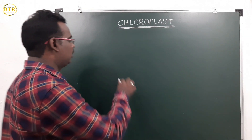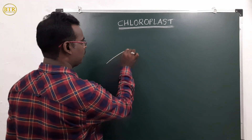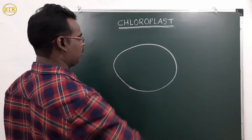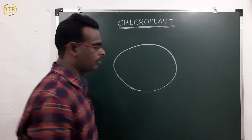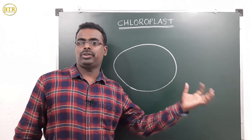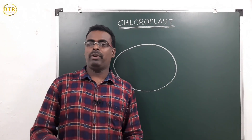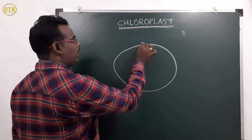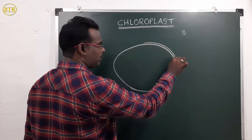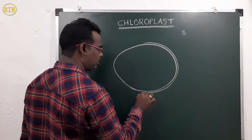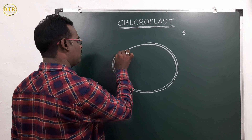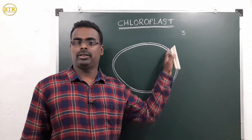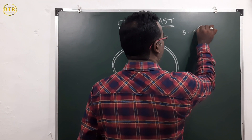Now let us see the structure of the chloroplast. Chloroplast is a membranous structure — it is covered by membranes. There are a total of three membranes: the outer membrane and the inner membrane.